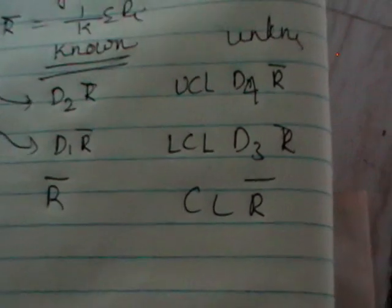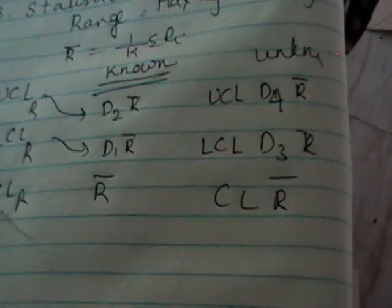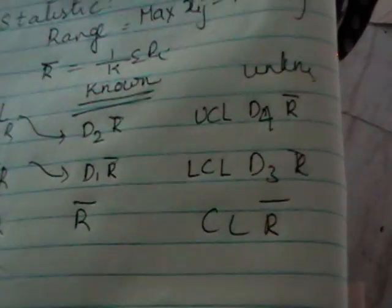Here also you will have control charts when standards are known case and when standards are unknown case. So when the standards are known to you, UCL will be D2 R bar and LCL will be D1 R bar and it is simply R bar. Where the standards are unknown, the UCL here is D4 R bar and LCL is D3 R bar and CL is nothing but R bar.